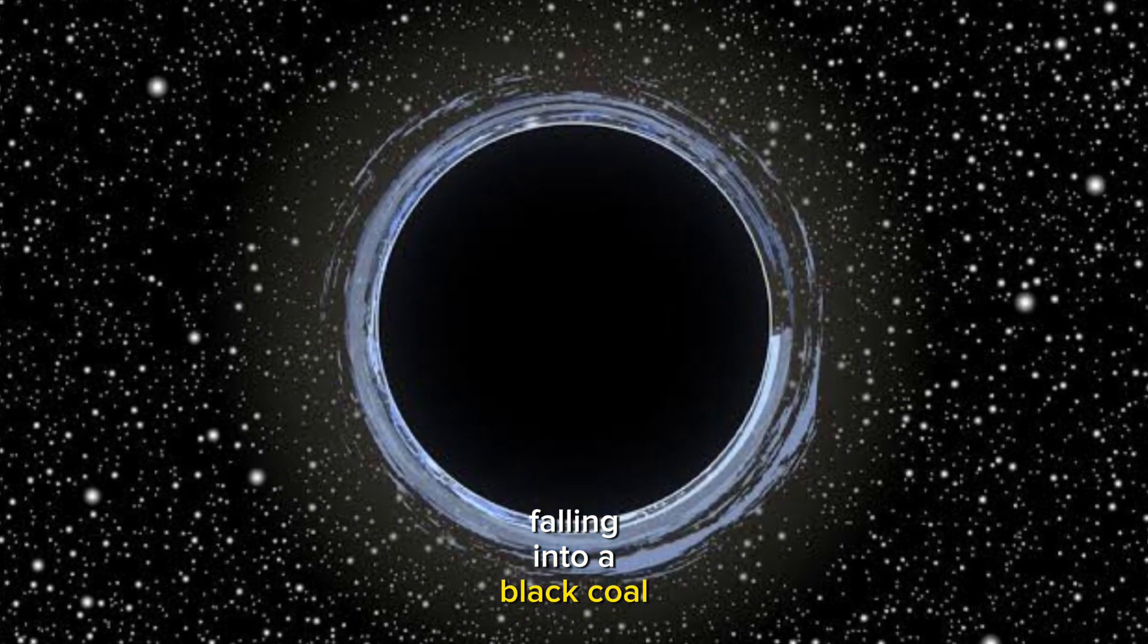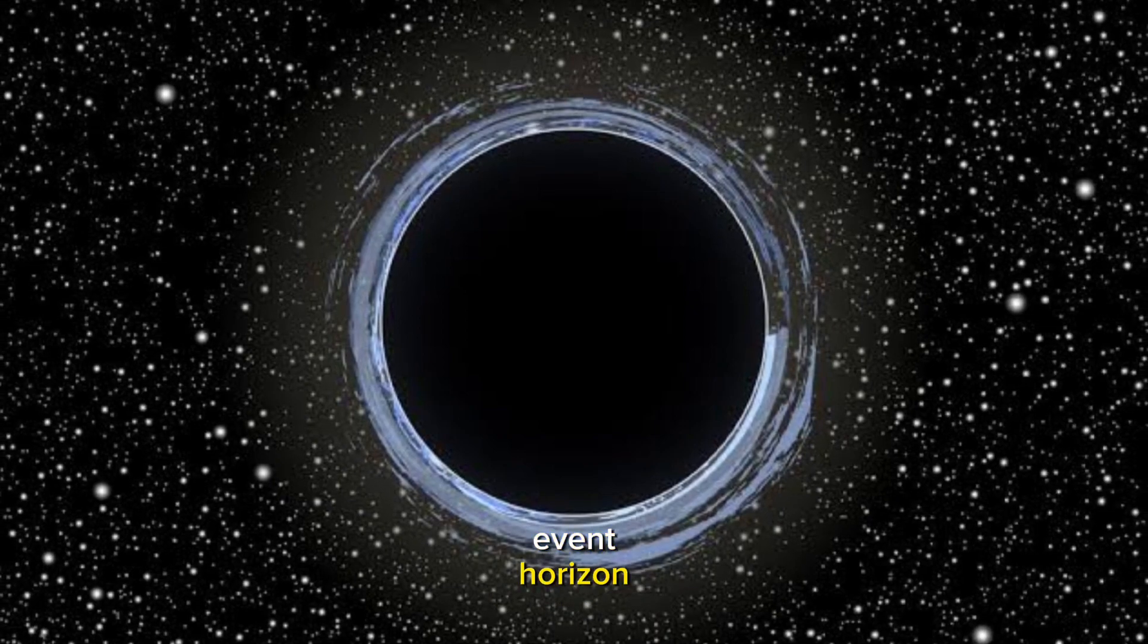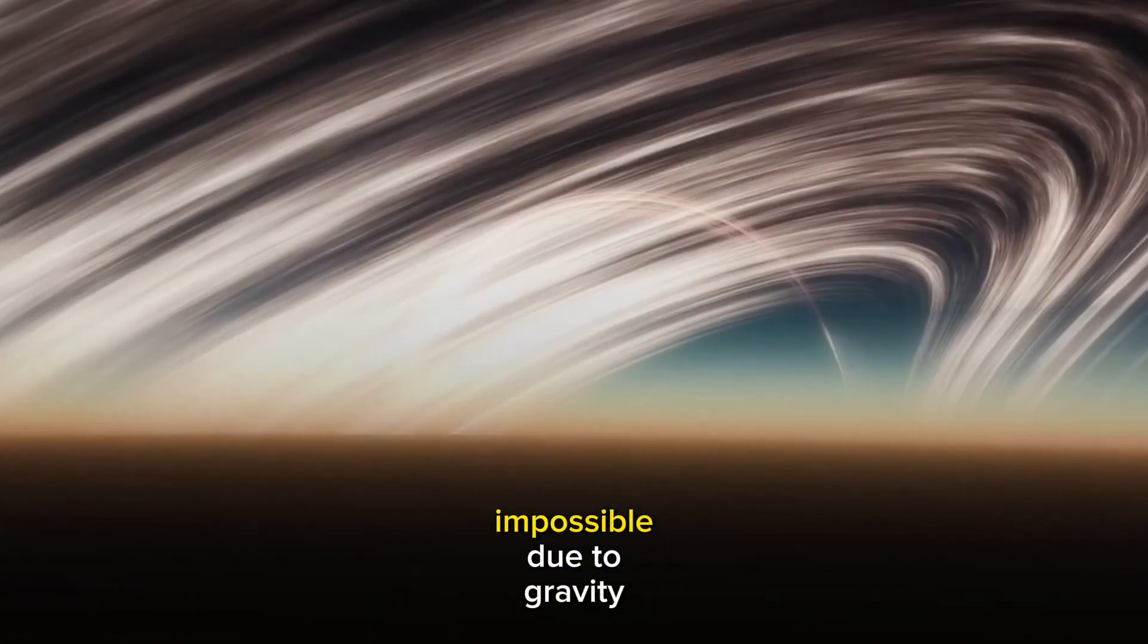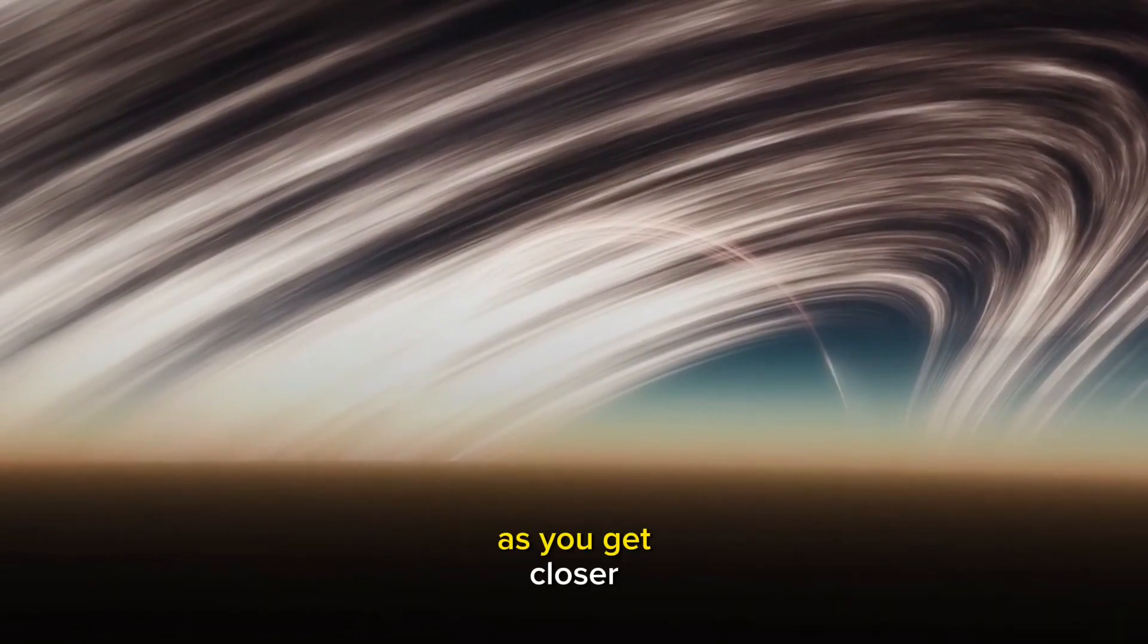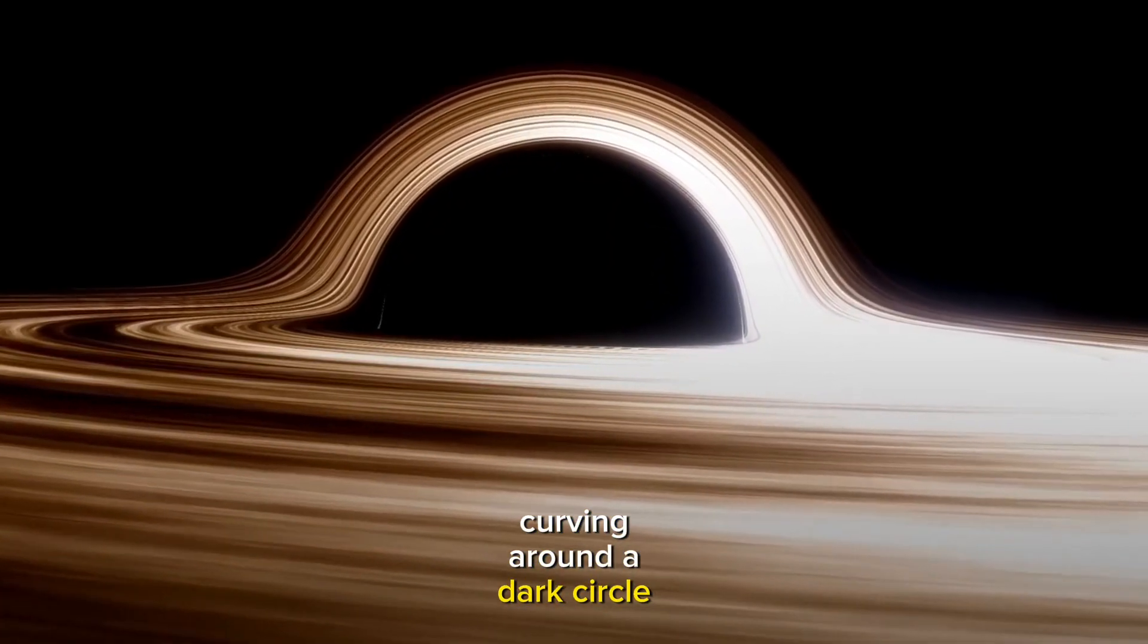Falling into a black hole. Imagine you're outside the event horizon, a point where escape is impossible due to gravity. As you get closer, you'd notice stars curving around a dark circle.